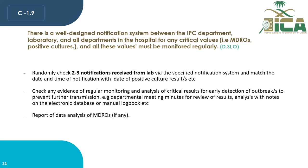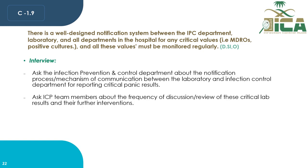The auditor must randomly check two to three notifications received from the lab and match the date and time of notification with the date of positive culture results. The auditor must also check for evidence of regular monitoring and analysis of critical results for early detection of outbreaks — for example, department meeting minutes for review of results, and analysis noted in the electronic database or manual logbook — including any MDRO data analysis reports if available.